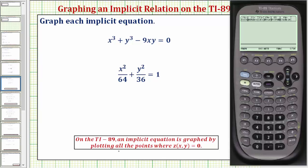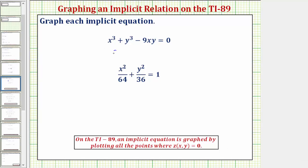On the TI-89, an implicit equation is graphed by plotting all the points where z of x comma y equals zero, which means to graph this first equation, because the right side is equal to zero, we'll be entering the equation as z of x comma y equals the left side of x cubed plus y cubed minus nine xy.